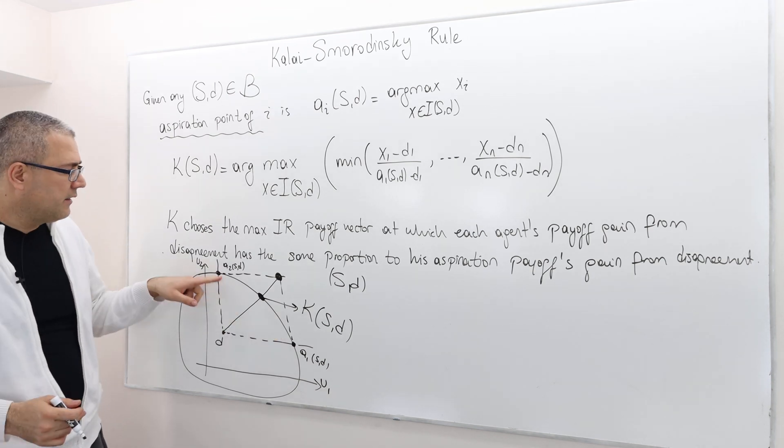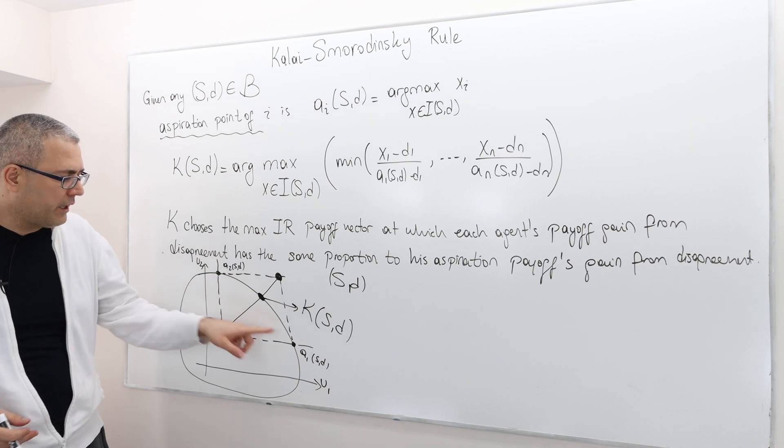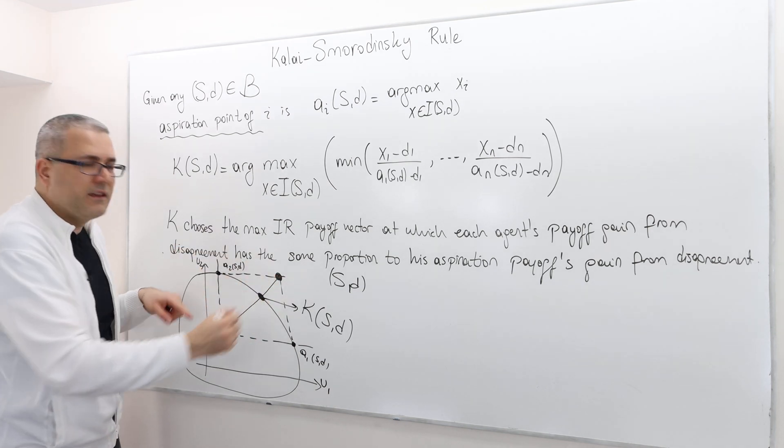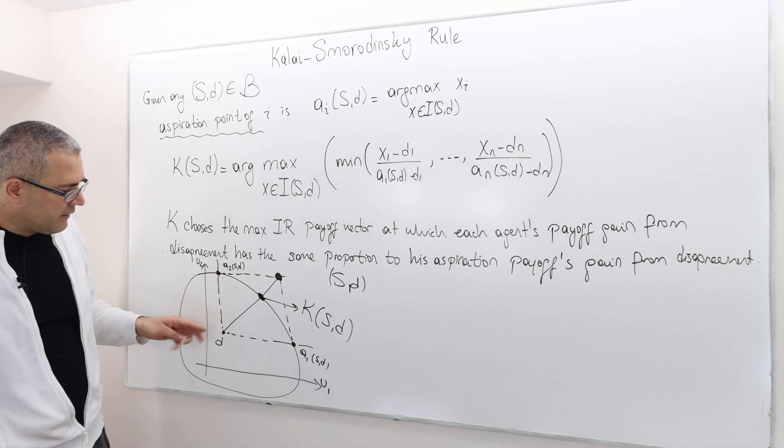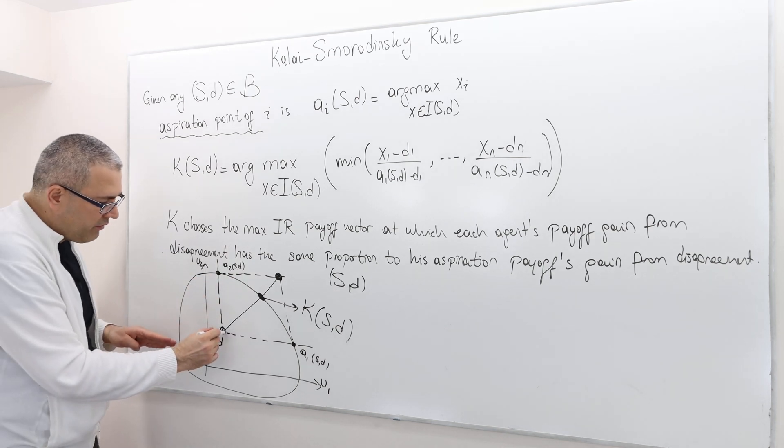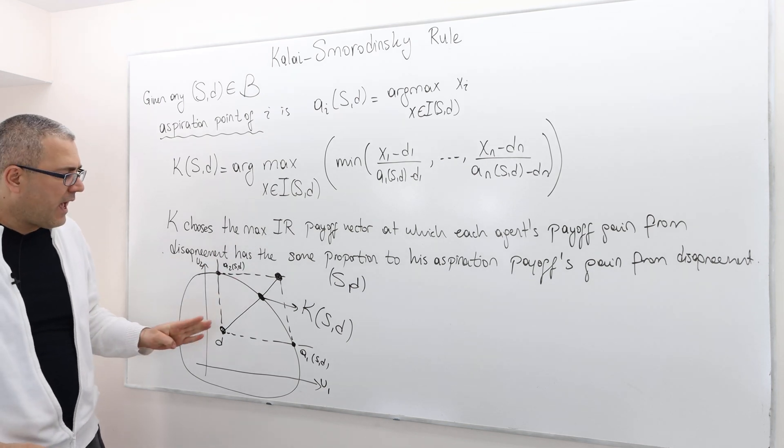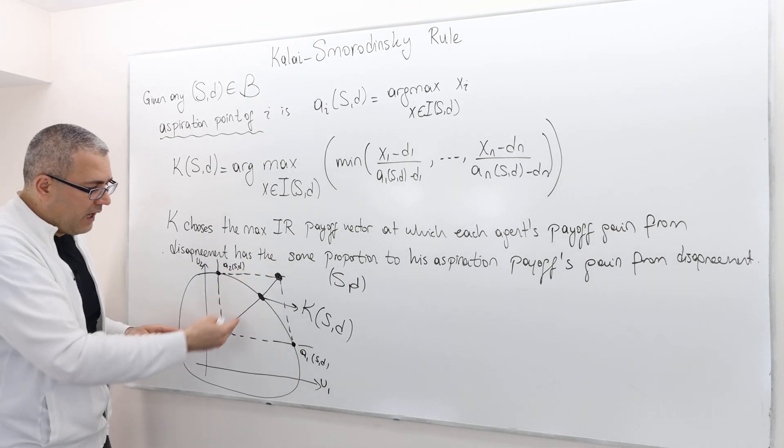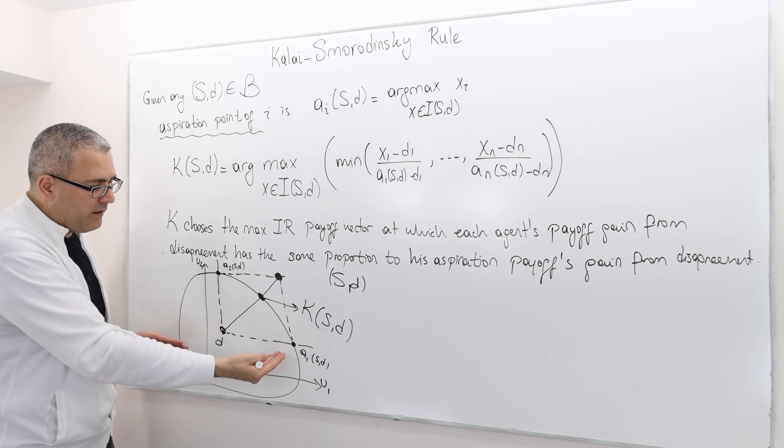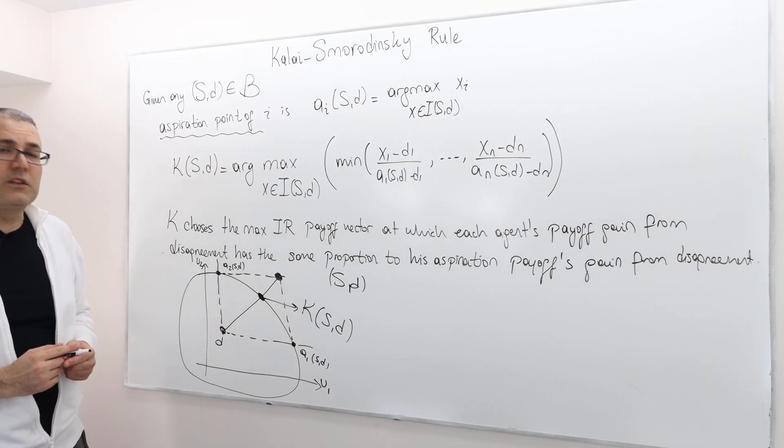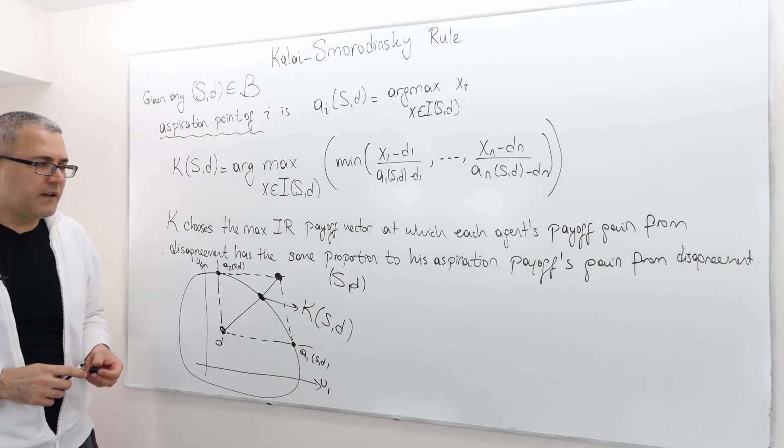You first find the aspiration point for each negotiator, then connect these dots and draw a line between the disagreement point and the aspiration payoff. This line intersecting with the boundary gives us the solution.